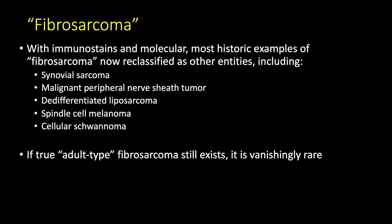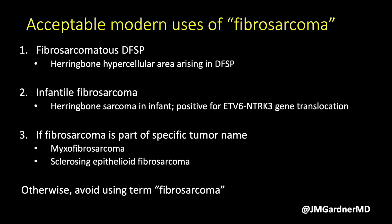In the WHO bone and soft tissue tumor book, adult-type fibrosarcoma is still listed as an entity, so technically it still exists. But if it exists, it is vanishingly rare — it's a diagnosis I have personally never made in 10 years of practice as a soft tissue pathologist. I've never called something fibrosarcoma NOS or adult-type fibrosarcoma. I'd rather say spindle cell sarcoma or undifferentiated spindle cell sarcoma if I really can't tell, because statistically you're probably going to be wrong if you make this diagnosis.